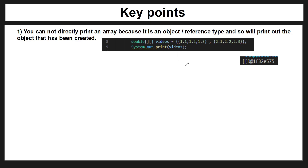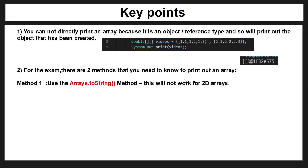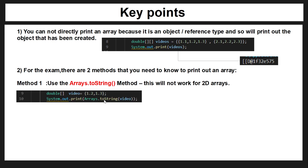There are two methods you need to know for the exam. The first is the Arrays.toString() method — you can convert the whole array into a string and that will print it out. However, this will not work for 2D arrays. For 2D arrays you must use a for loop. In my next part four videos we're going to be looking more at for loops, so if you don't recognize how a for loop works, don't worry. The important thing is that you can't just call print on an array — you have to either convert it to a string or loop through it.